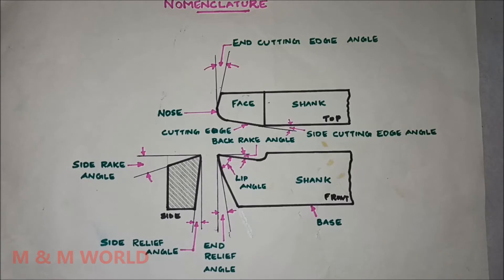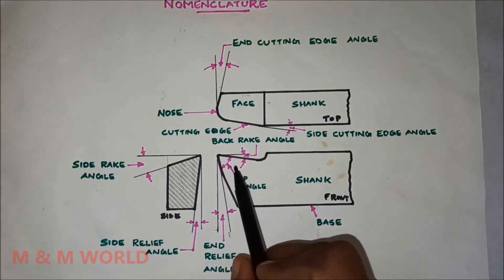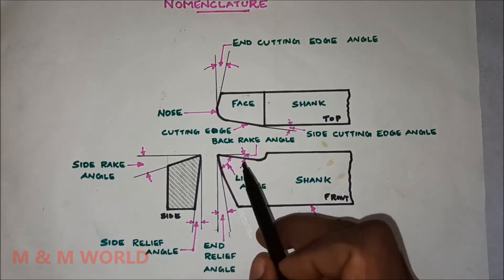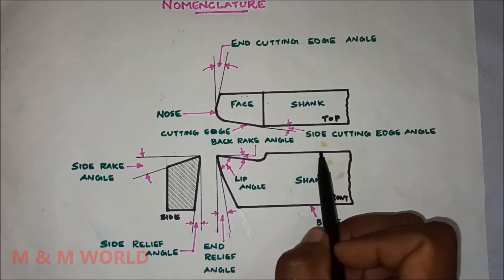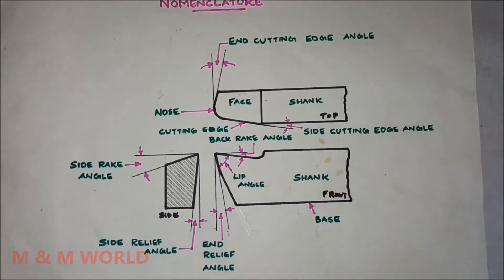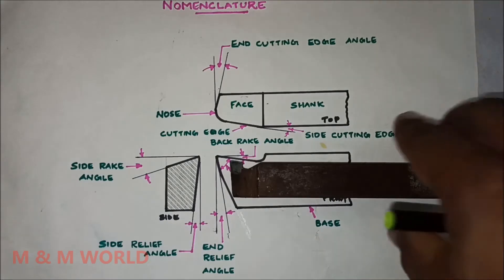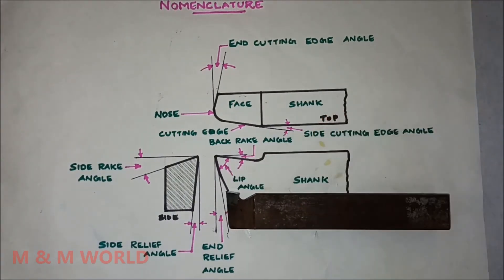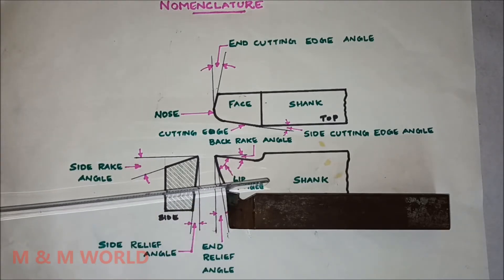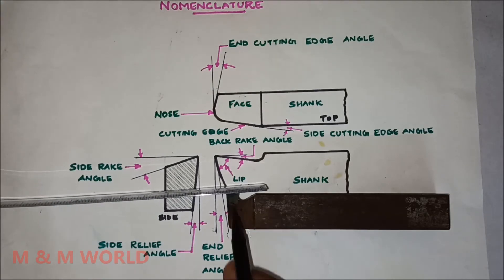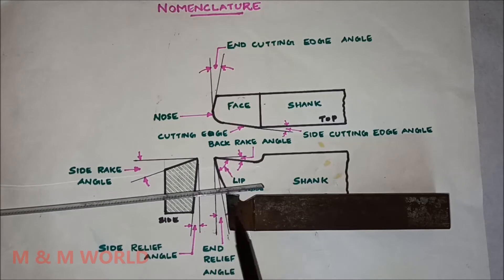Now let us go through the various tool angles. The first one is the back rake angle. The back rake angle is the angle made by the face of the tool and a plane parallel to the base of the cutting tool, measured in the direction of the tool shank. In the front view, you can see this angle between the face of the tool and the plane parallel to the base, measured parallel to the tool shank — this is the back rake angle.